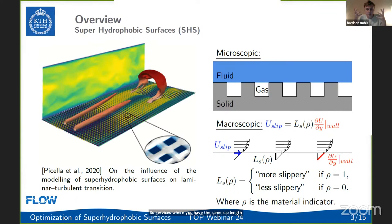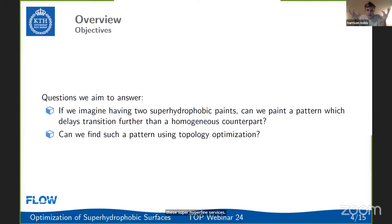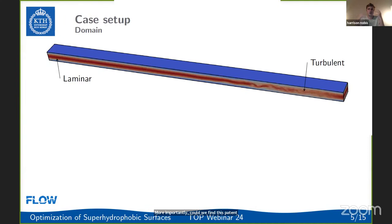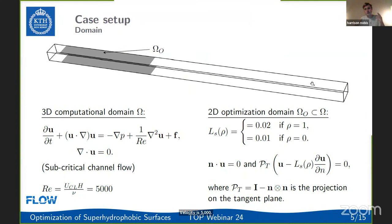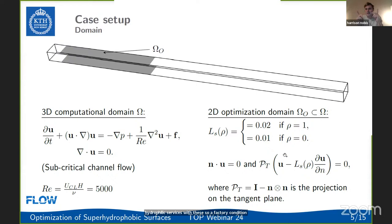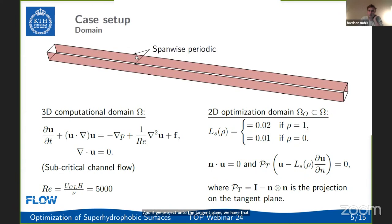Pekkala et al. looked at homogeneous surfaces — same slip length everywhere. We wanted to make the slip length a function of a material indicator and see if we can design the macroscopic layout of super hydrophobic surfaces. Specifically: if we imagined two different super hydrophobic paints, could we paint a pattern that delays transition further than a homogeneous one? We have a 3D computational domain governed by the Navier-Stokes equations at Reynolds number 5000 based on the half-channel height and centerline velocity, looking at subcritical transition, and a 2D optimization domain on the top and bottom surfaces.